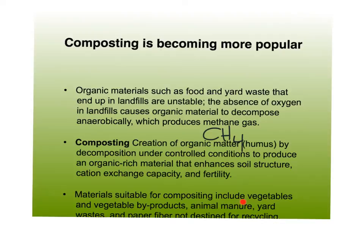You want vegetable products and animal manure - preferably from omnivores rather than meat eaters, because omnivores have more vegetable products in their manure. Also paper not destined for recycling - paper that is already slightly soiled - can go into compost.